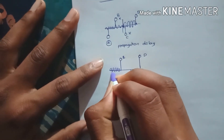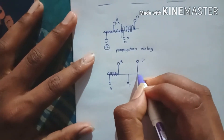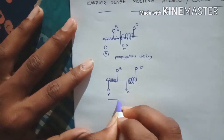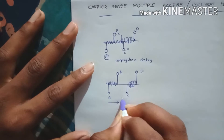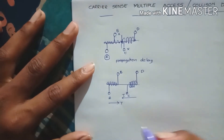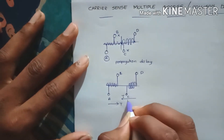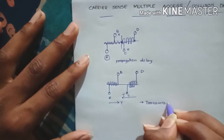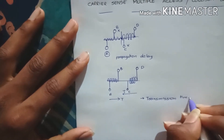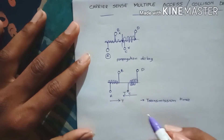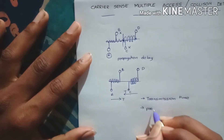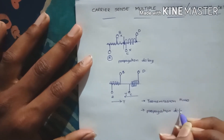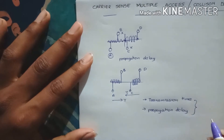A has some data to transmit to destination D, and D is also transmitting data. How much time it takes to transmit is known as transmission time. The delay while transferring the data is known as propagation delay. We have to measure how these two values work together in data transmission.